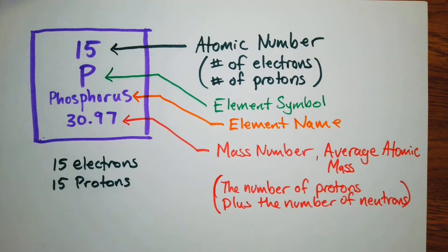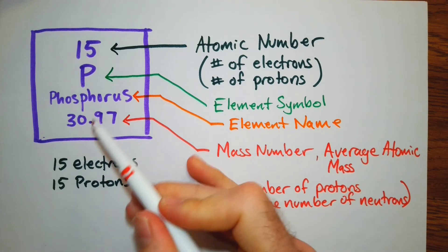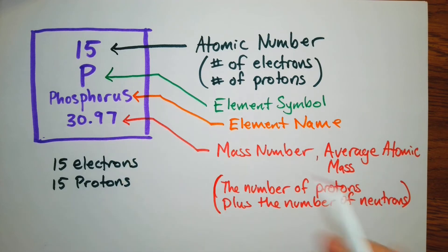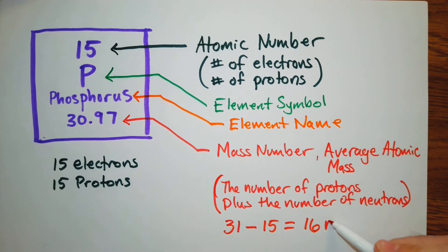And for this next one, to calculate the number of neutrons, what we're going to do is we are going to take our mass number, and we round it up to the whole number, because you can't have just part of a proton or neutron. So we round it up to the whole number. And we'll have here 31, and then we're going to subtract the number of protons that we have. Well, the atomic number told us the number of protons, so 31 minus 15 is going to give us 16. And this is going to be the number of neutrons.